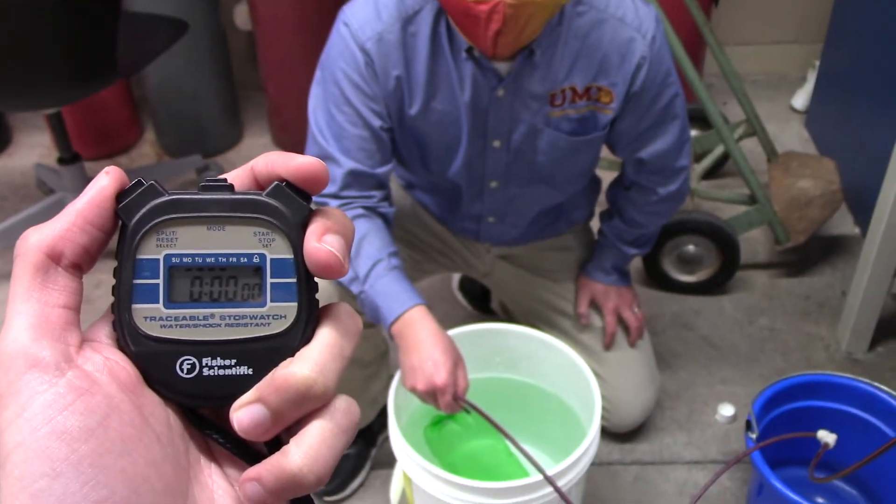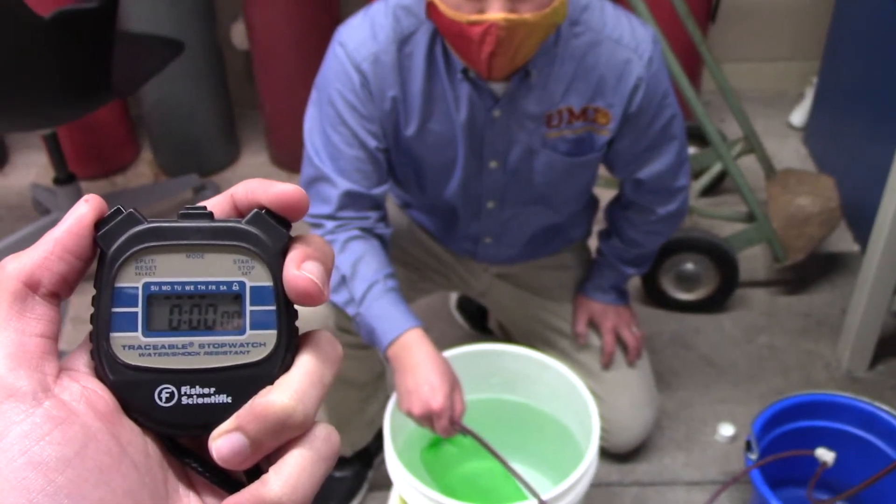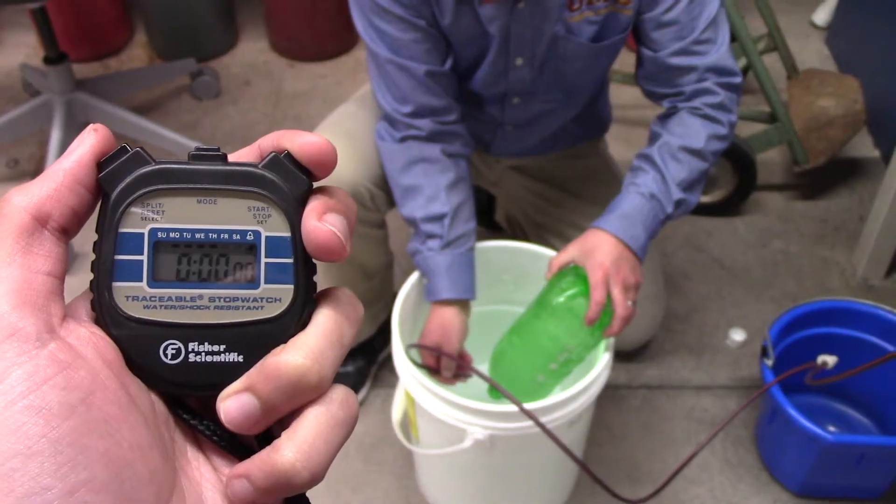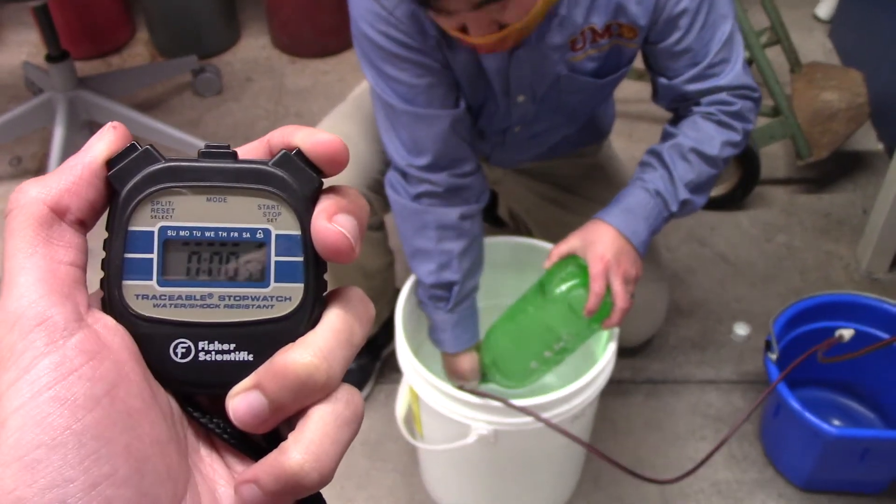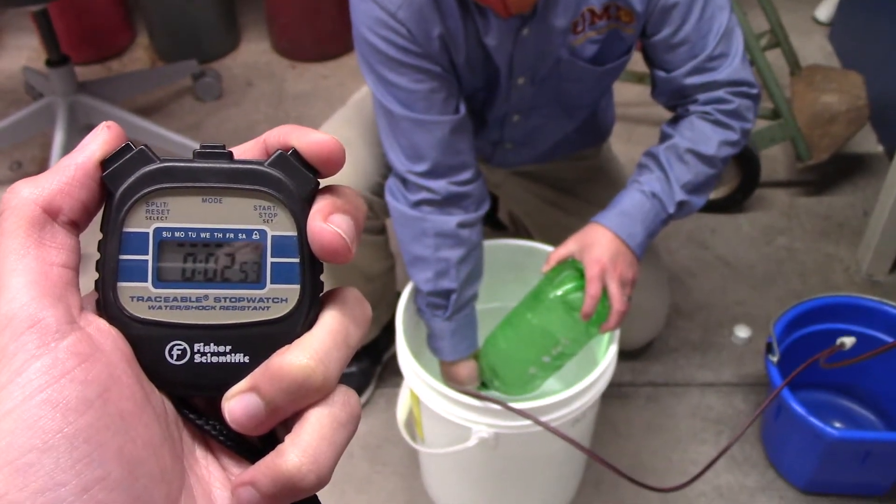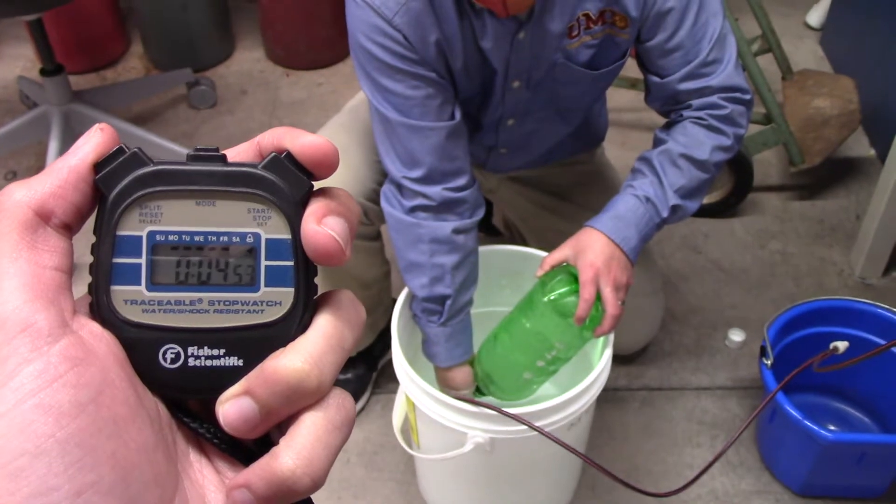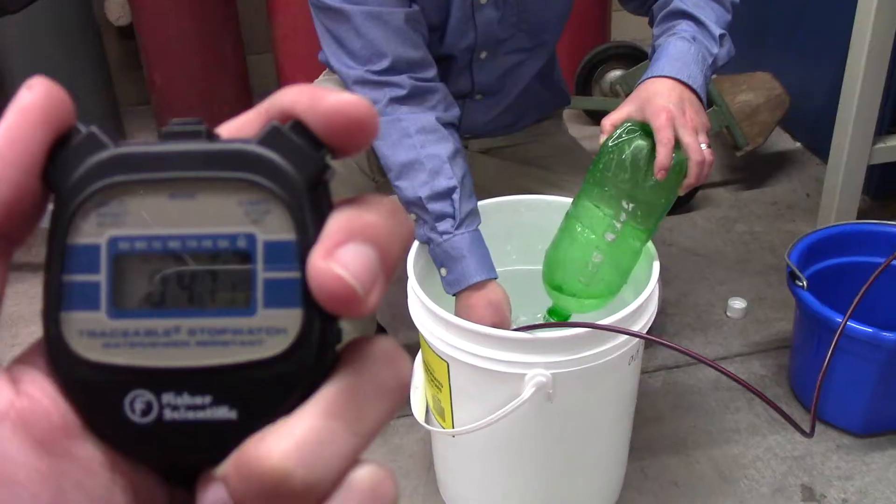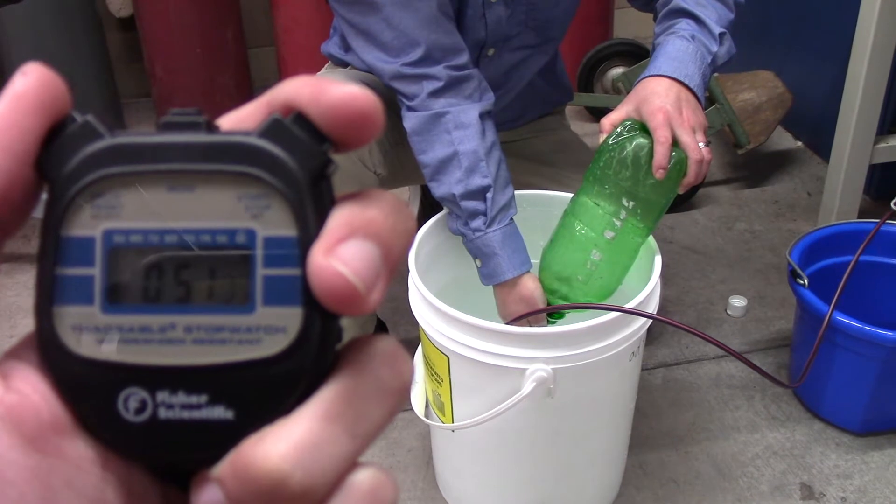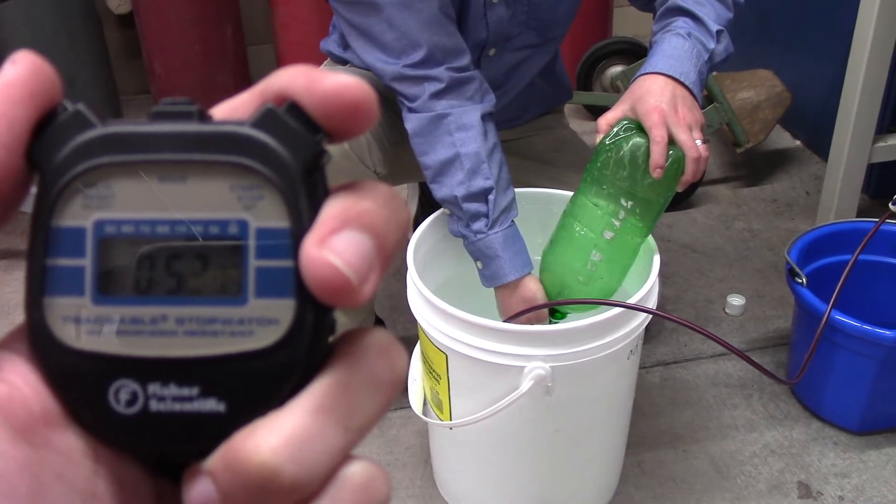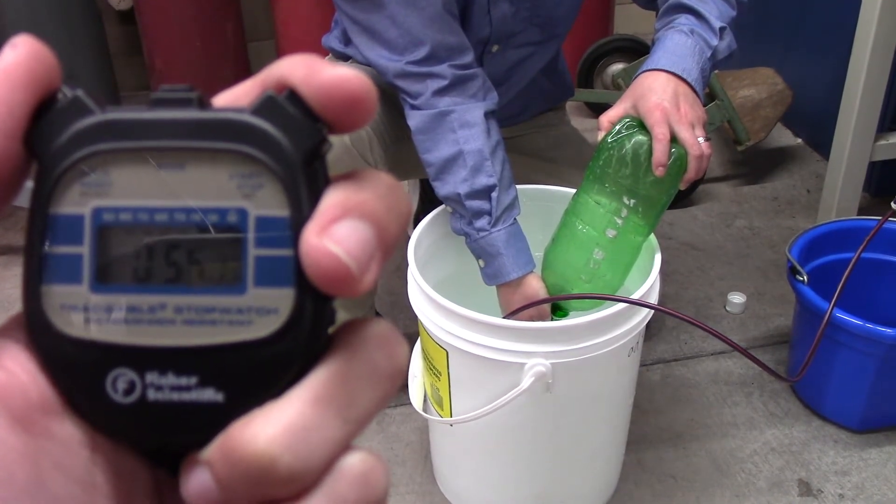One person will then be in charge of a stopwatch while another is in charge of the bottle. As soon as the person with the bottle inserts the tubing inside the bottle with the opening fully submerged, the other person will begin timing with the stopwatch. Continue timing until all the water has exited the bottle and use this value to calibrate the flow rate of the nitrogen stream.